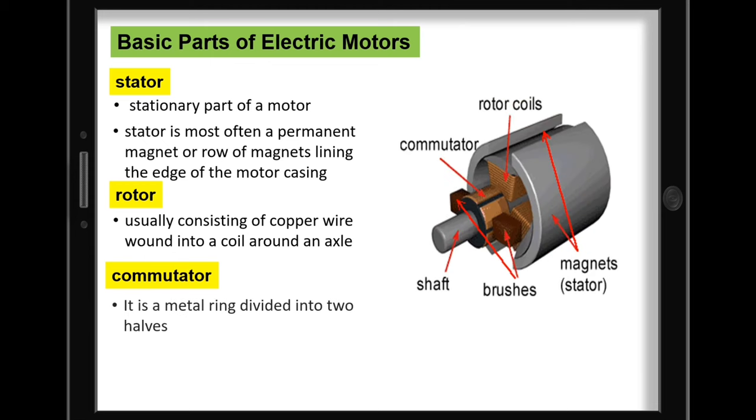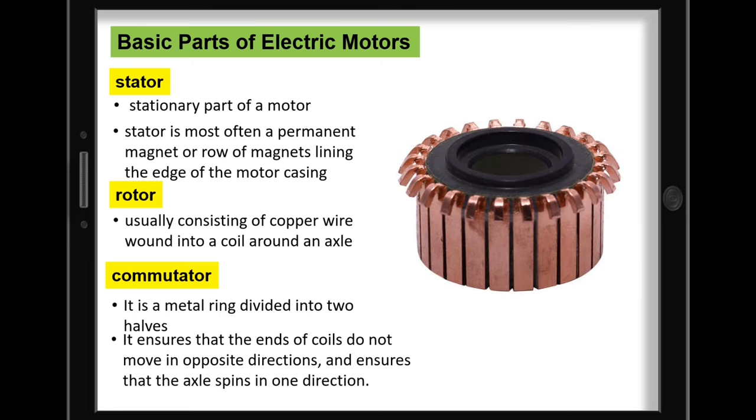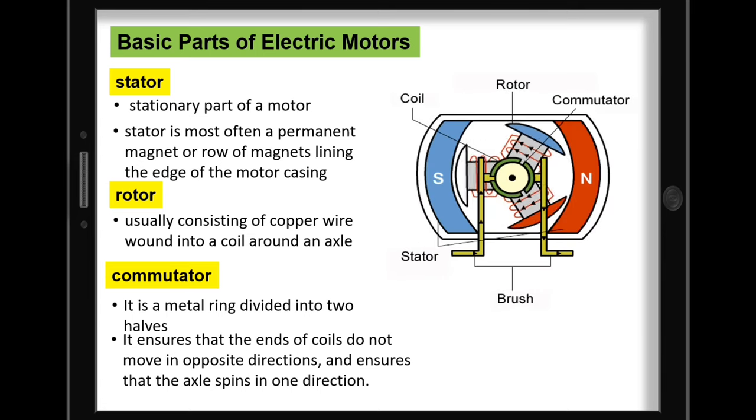On the other hand, the commutator, which sits at one end of the coil, is a metal ring divided into two halves. The commutator reverses the electrical current in the coil each time the coil rotates half a turn. The commutator periodically reverses the current between the rotor and the external circuit or the battery. This ensures that the ends of coils do not move in opposite directions and ensures that the axle spins in one direction.